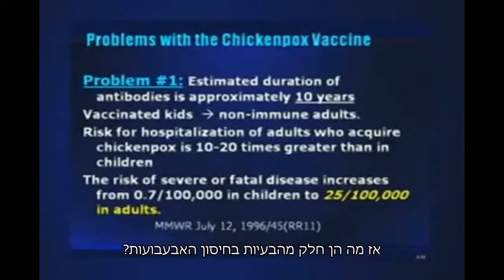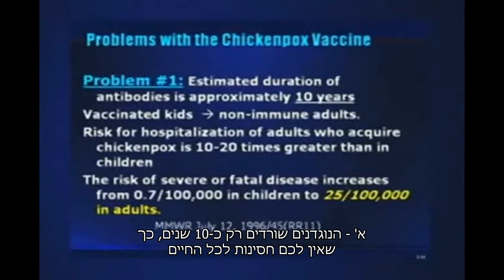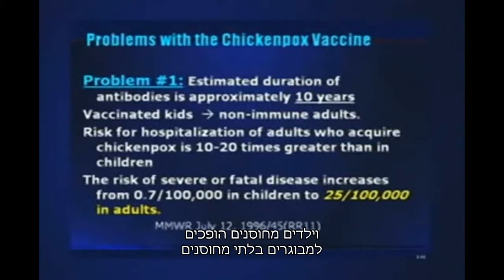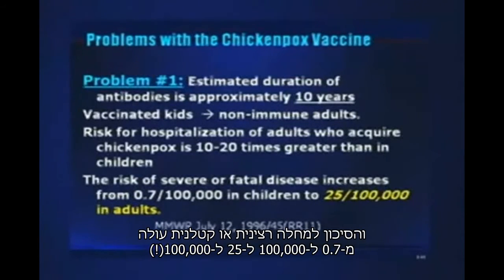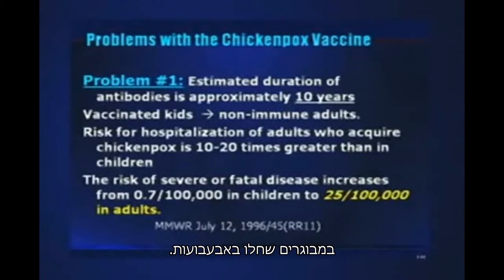So what are some problems with the chicken pox vaccine? Number one, the antibodies only last about 10 years, so you don't have lifetime immunity. Vaccinated kids become non-immune adults, and the risk of hospitalization for adults who acquire chicken pox is almost 20 times greater than for kids. The risk of severe or fatal disease increases from 0.7 per 100,000 to 25 per 100,000 in adults with chicken pox.